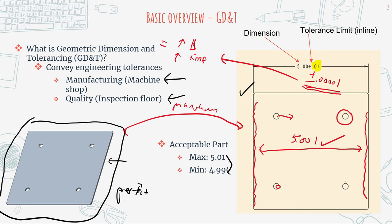At the end of the day, GD&T is a balance between increasing accuracy and increasing time. You typically can only get one or the other. For a mechanical designer, it's understanding this trade-off that really drives the need to incorporate GD&T within mechanical drafting.